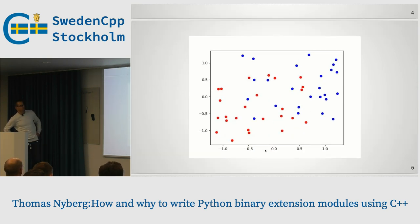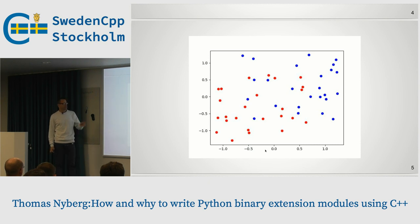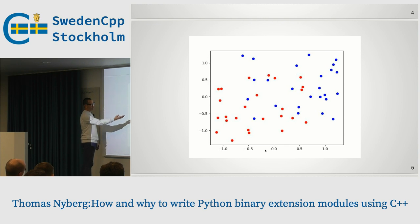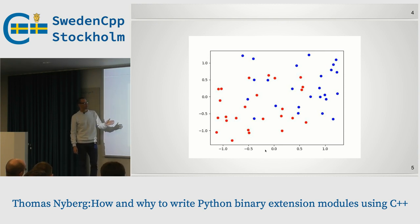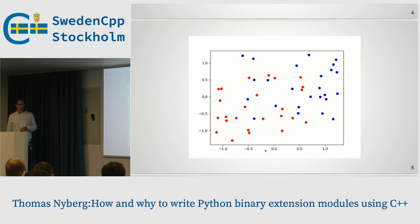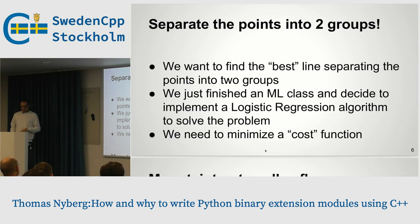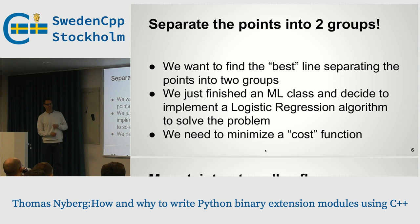So this is our starting point — a bunch of dots. We want to draw a line that separates this plane pretty nicely into red and blue dots. This is the sort of thing you'd do if you work in machine learning and advertising. We just finished a machine learning class and we know what logistic regression is, but we're going to write our own implementation.